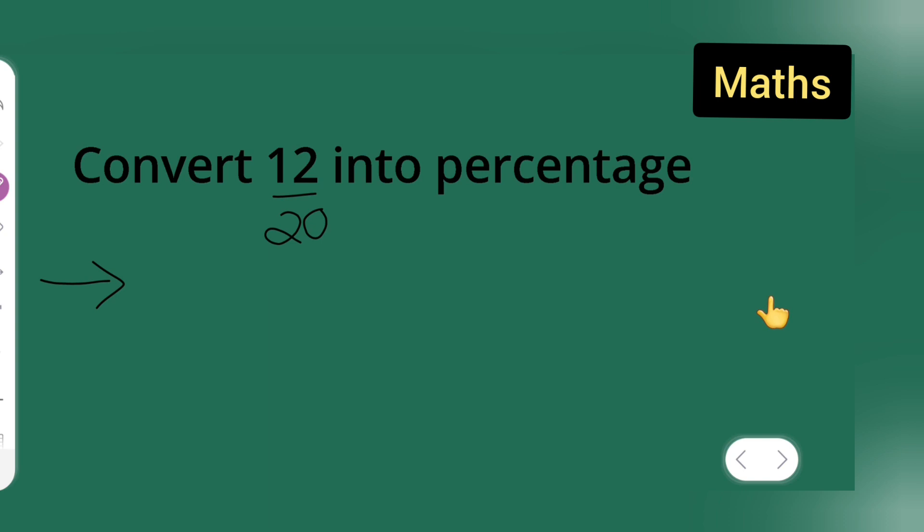So, for that, what y'all need to do is take 12 upon 20, multiplied by 100.